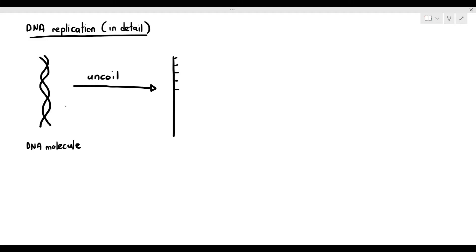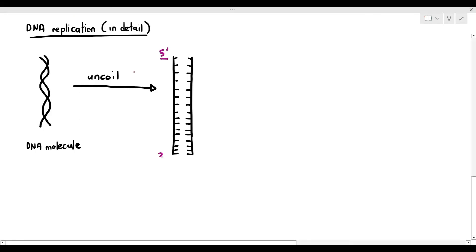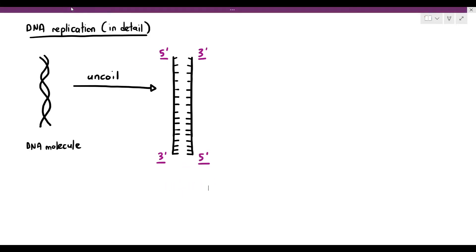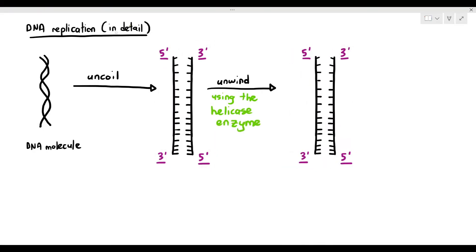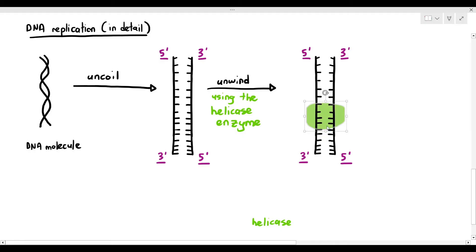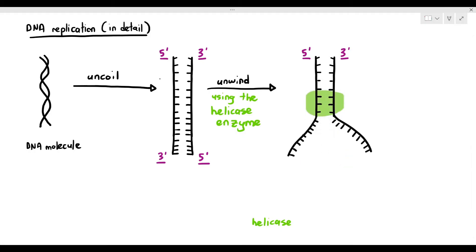The first thing that needs to happen to the DNA molecule is it needs to uncoil. And when it uncoils, you can see the direction of the DNA labeled — the 5 prime and 3 prime ends. It will then have to unwind. There is an enzyme called helicase, and what it does is unwind the DNA like a zipper, starting at one end and moving along the DNA, separating the strand bit by bit. The hydrogen bonds are broken, and it unwinds the DNA a little bit at a time, separating the strands.